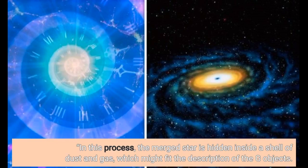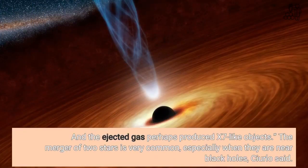In this process, the merged star is hidden inside a shell of dust and gas, which might fit the description of the G-objects. And the ejected gas perhaps produced X-7-like objects.